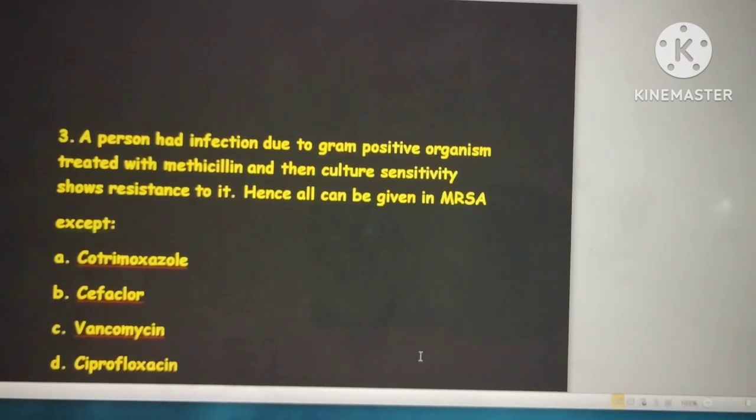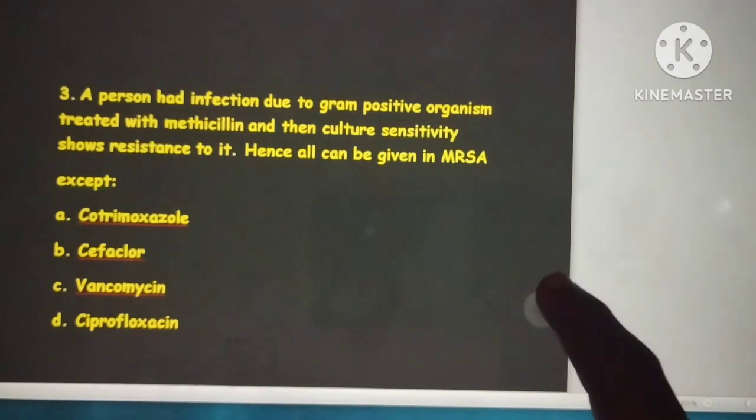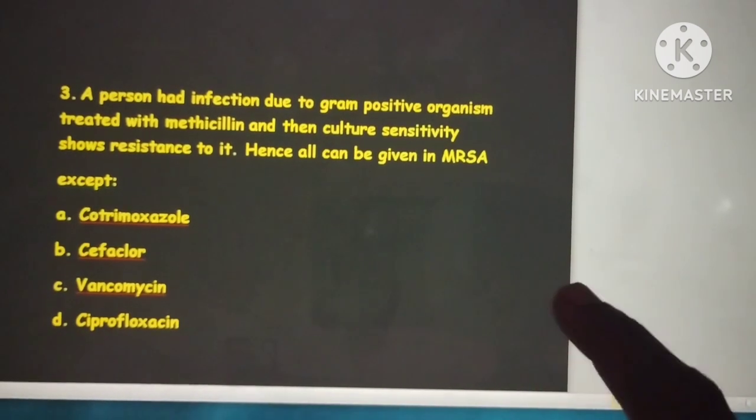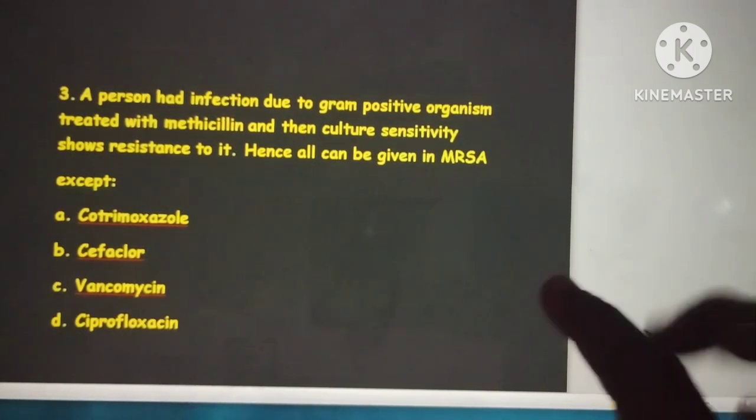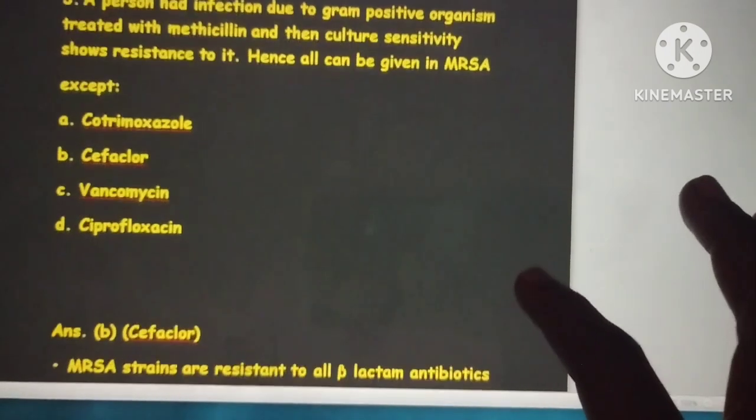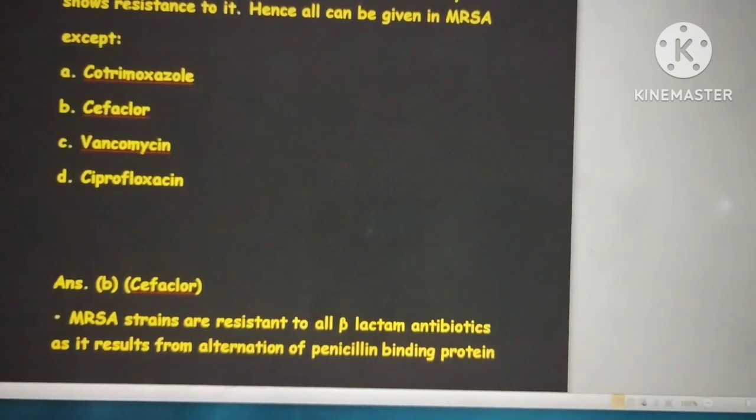Options are cotrimoxazole, cefaclor, vancomycin, and ciprofloxacin. The answer is B because MRSA strains are usually resistant to all beta-lactam antibiotics.